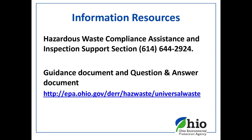For more information, you can contact your local Ohio EPA district office in the Hazardous Waste Program. If you happen to know your inspector, that's a great resource too. In the central office in Columbus, we have the Hazardous Waste Compliance Assistance and Inspection Support Group. We also have a guidance document and a question-and-answer document on our website — all the issues of confusion are addressed there, with about 43 questions answered. For a copy of the Universal Waste Rules, you can find them in Chapter 3745-273 of the Ohio Administrative Code.